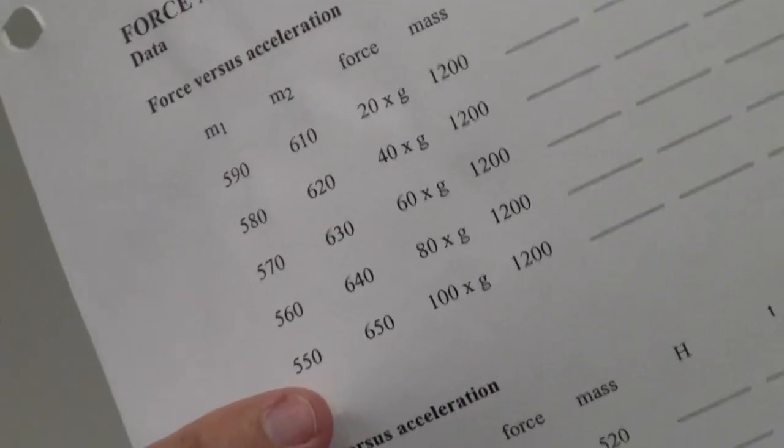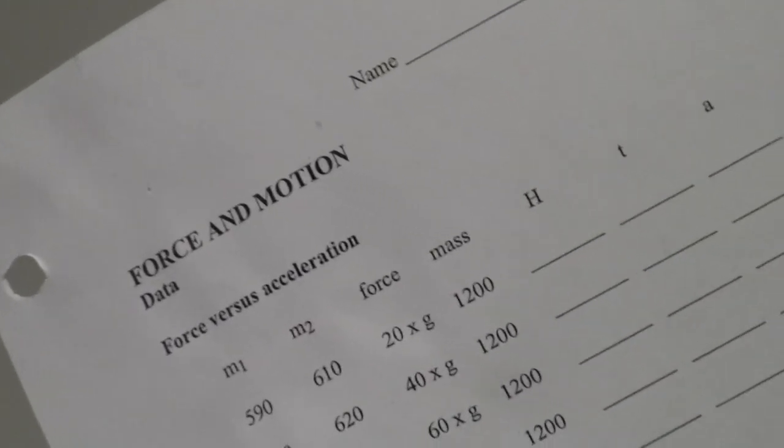We'll be writing our data on page 19. I'd encourage you to print out pages 19 through 23 — there are actually three labs in this one. So print out those pages and we'll start together. What you will turn in is five pages: the raw data, the three graphs, and the answers to the questions.